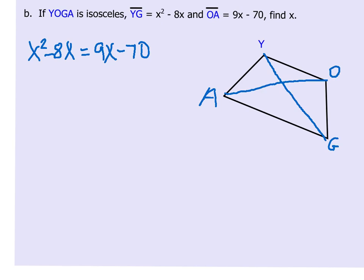Now we have a problem that's going to involve factoring to solve, because we have both an X squared and an X term. The first thing I'm going to do is subtract the 9X and add the 70 to both sides, so that we have everything on one side and it's equal to 0. So if I subtract the 9X, I'm going to have X squared minus 17X, and if I add the 70, it's going to be plus 70 equals 0.